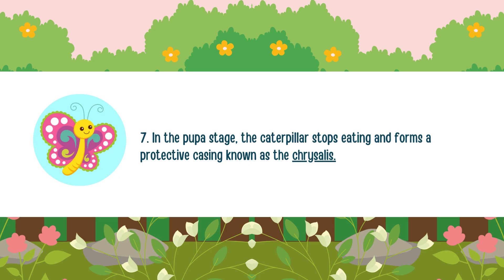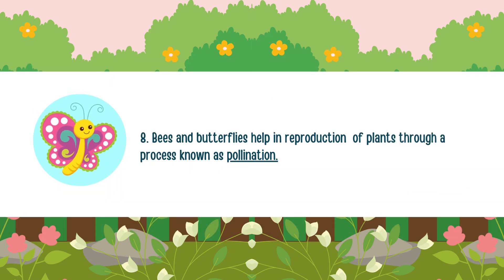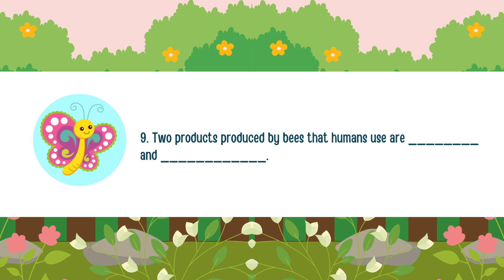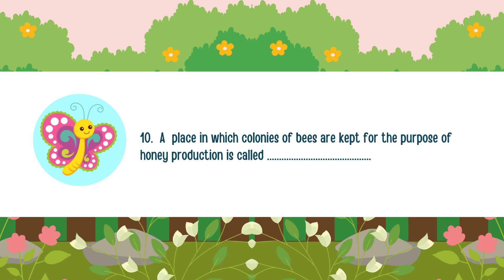Three more questions to go. Bees and butterflies help in reproduction of plants through a process known as — pollination. Two products produced by bees that humans use are — honey and beeswax. And the last question: a place in which colonies of bees are kept for the purpose of honey production is called — an apiary. Humans keep bees for the purpose of honey production in a place called an apiary.